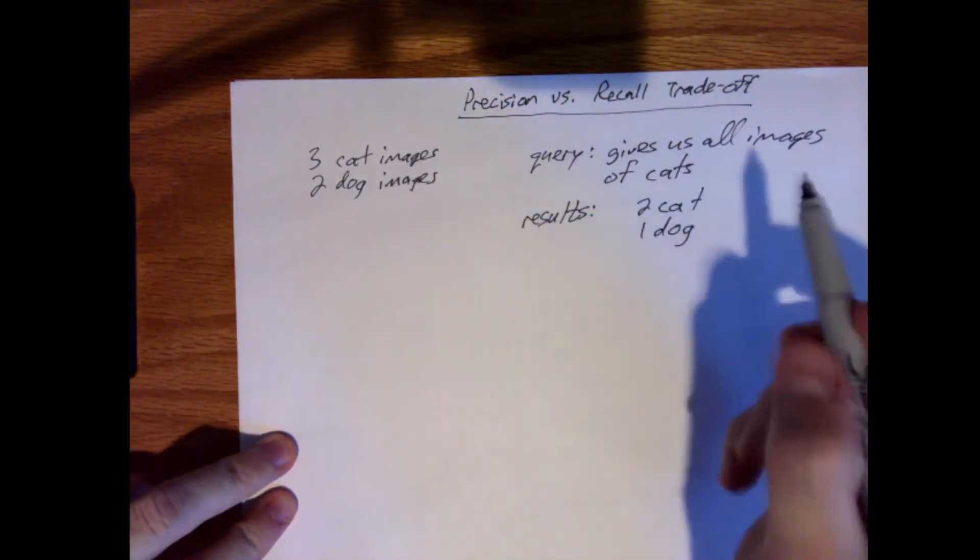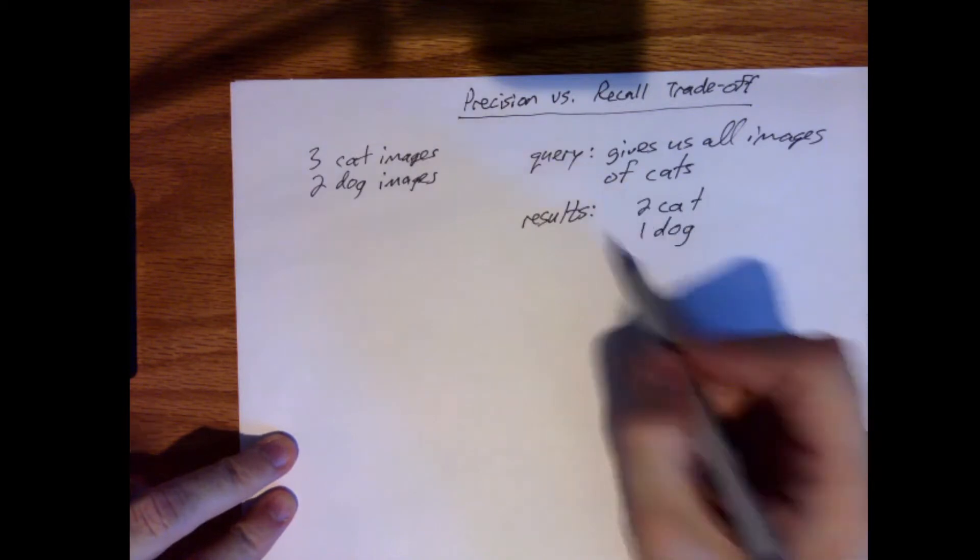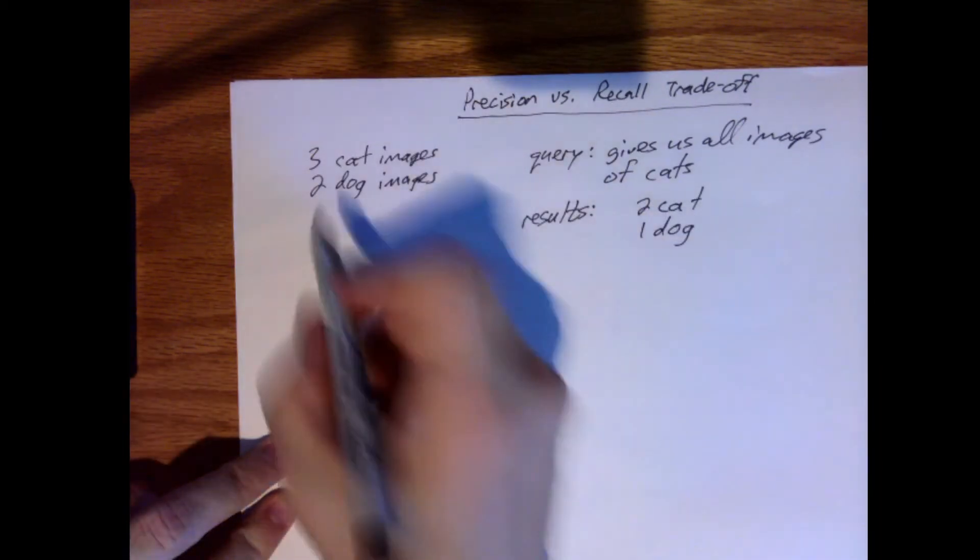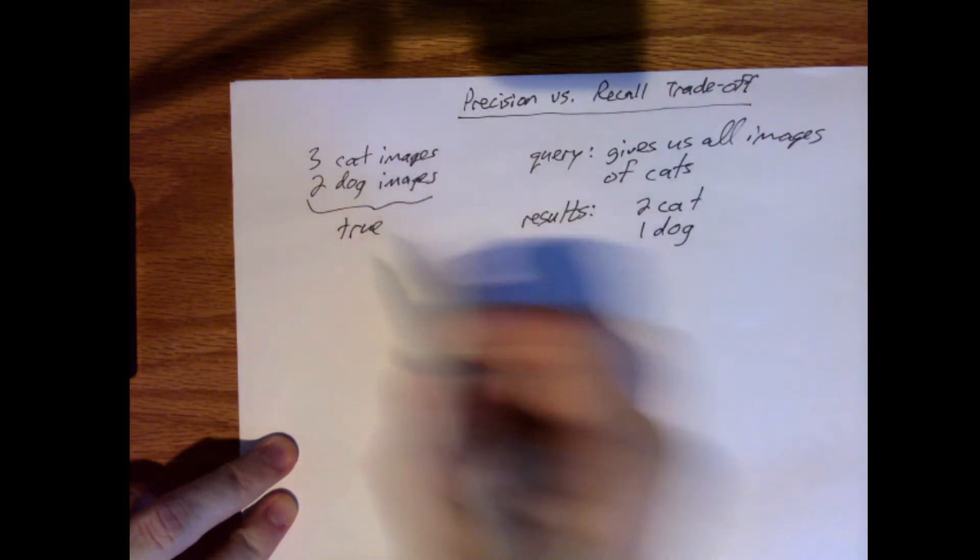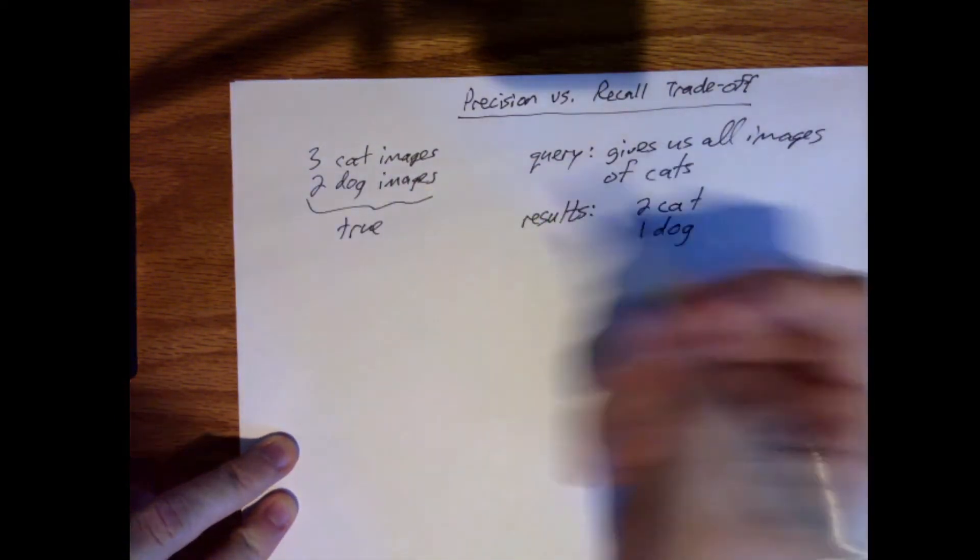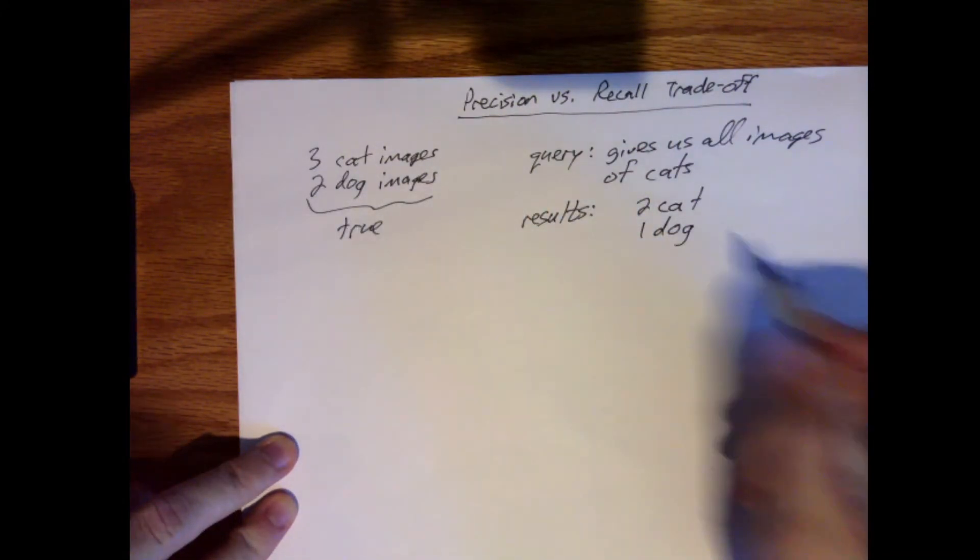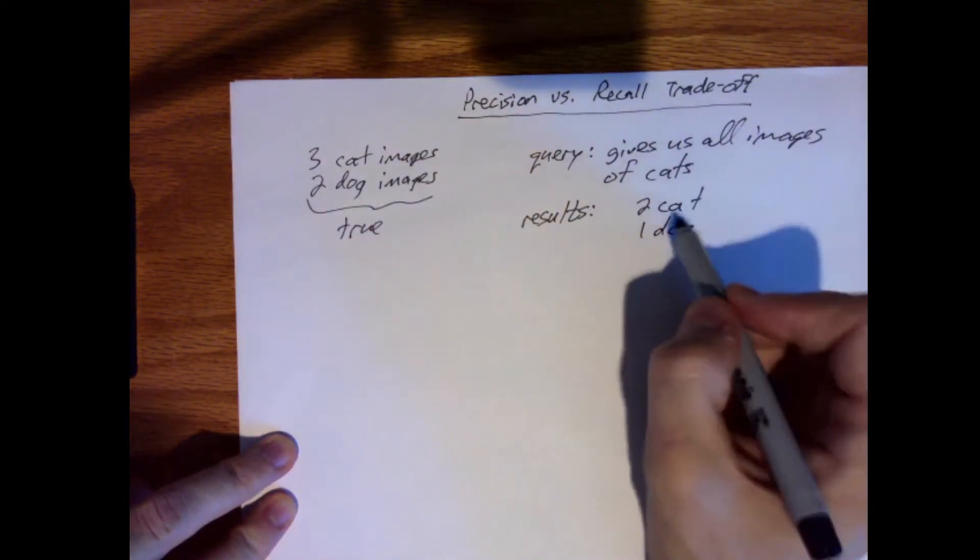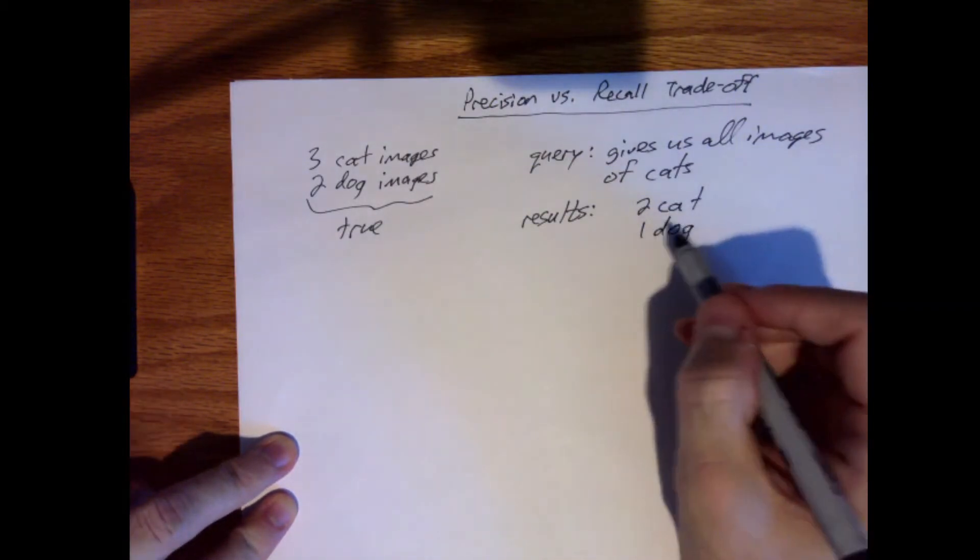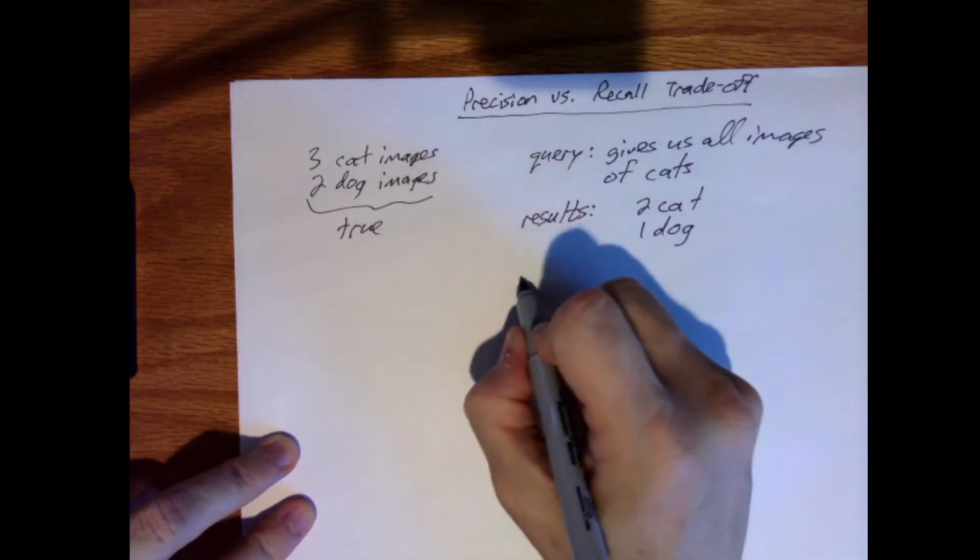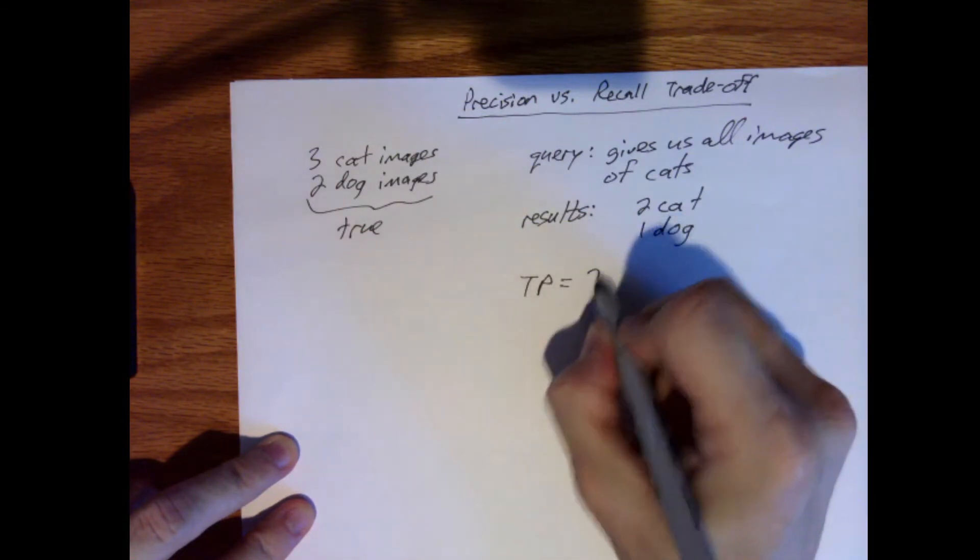So since two of the three images that were returned really are cats, because these values right here, these are the true values. But our system doesn't know that. That's why we have some algorithm trying to figure it out. Since two of the three things that were returned are really cats, then our true positive rate is equal to two.